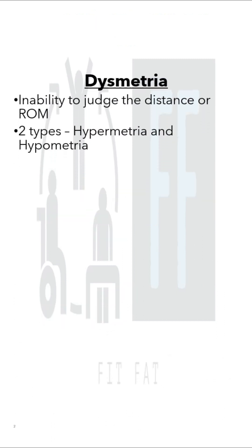The first option is dysmetria. It is the inability to judge the distance or the range of motion. It has two types: hypermetria, which is overestimation, and hypometria, which is underestimation of judging the distance.